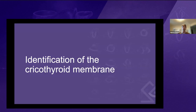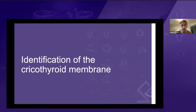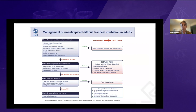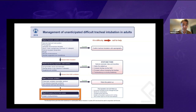The first topic is identification of the cricothyroid membrane. The growing interest in this started once the airway guidelines began making the pathway to front-of-neck access shorter. This is the Difficult Airway Society guideline published in 2015. As you can see, Plan D — emergency front-of-neck access when you reach a cannot intubate, cannot oxygenate situation — is now much closer to your first plan, Plan A.